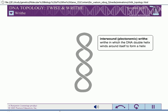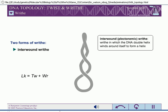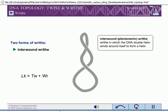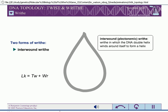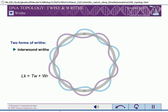Writhe can take two forms. One form is interwound or plectonemic writhe. In interwound writhe, the DNA is wound around itself, forming a helix. Most CCC DNA molecules exhibit interwound writhe.